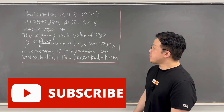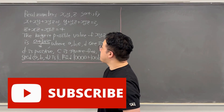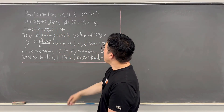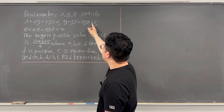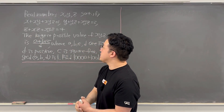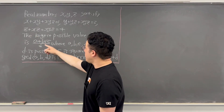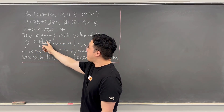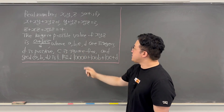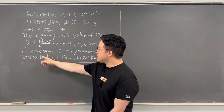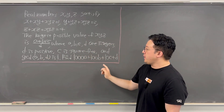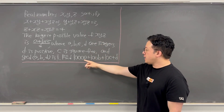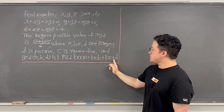Here's the question. Real numbers x, y, z satisfy: x + xy + xyz = 1, y + yz + xyz = 2, and z + xz + xyz = 4. The largest positive value of xyz is (a + b√c) / d, where a, b, c, d are integers, d is positive, c is square-free, and gcd(a, b, d) = 1. Find 1000a + 100b + 10c + d.